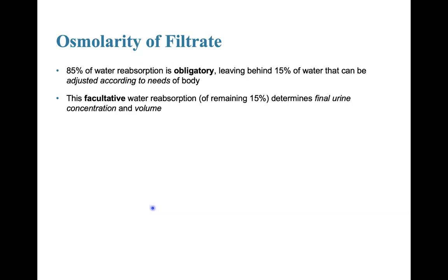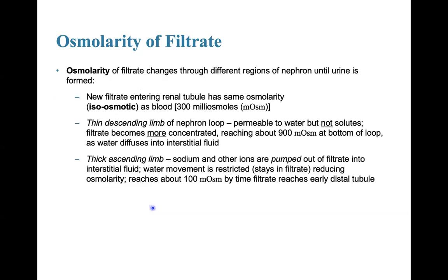The osmolarity of filtrate changes throughout the different regions of the nephron until the urine is actually formed. New filtrate entering the renal tubule has the same osmolarity as blood, which is about 300 milliosmoles. The thin descending limb in the nephron loop is permeable to water but not solutes, so the filtrate becomes more concentrated, reaching about 900 milliosmoles at the bottom of the loop as water diffuses back into the interstitial fluid.